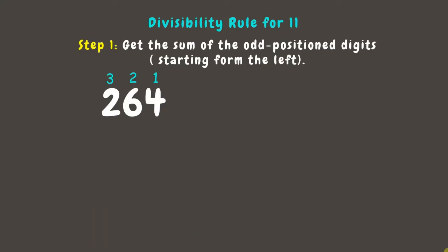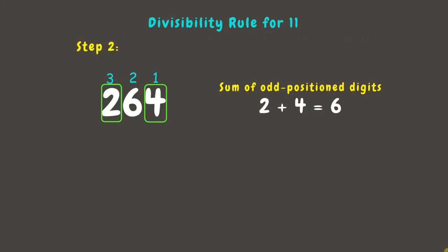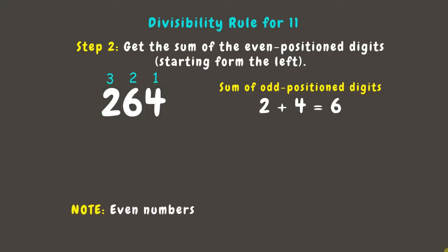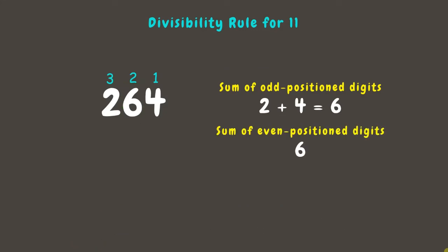For 264, the odd position digits are 4 and 2; adding them gives us 6. Next step is to get the sum of the even position digits. Remember, even positions are 2, 4, 6, 8, 10, 12, and so on. Here we can see that 6 is the only even position digit.